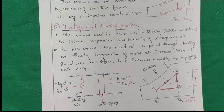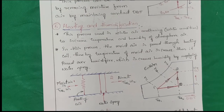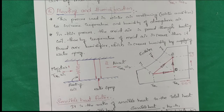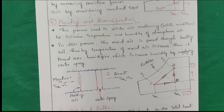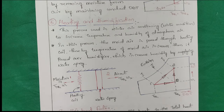Next, what is heating and humidification? This is a very important process. Where is it applicable? In air conditioning — there are two types: summer and winter air conditioning. In summer you decrease the temperature; in winter you increase the temperature. In a winter air conditioning system, you use heating and humidification — you increase the temperature and you increase the humidity.